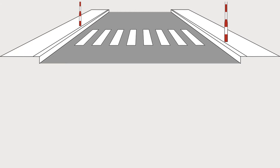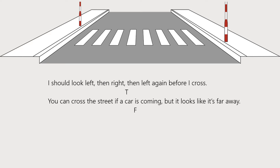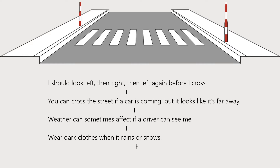Alright children, are you ready to check your answers? Let's begin. Sentence number one — I should look left, then right, then left again before I cross. That is true. Sentence number two — you can cross the street if a car is coming. That sentence is true. And finally, sentence number four — wear dark clothes when it rains or snows. Of course, this sentence is false. You need to wear bright colored clothes. Excellent. You did a great job, children. Well done.